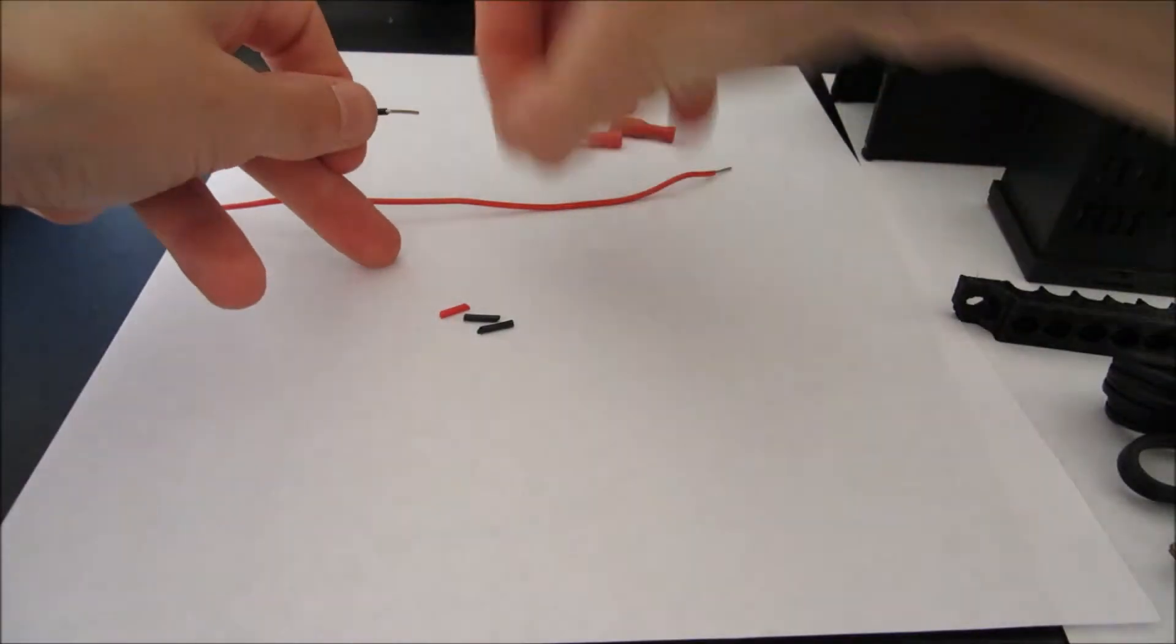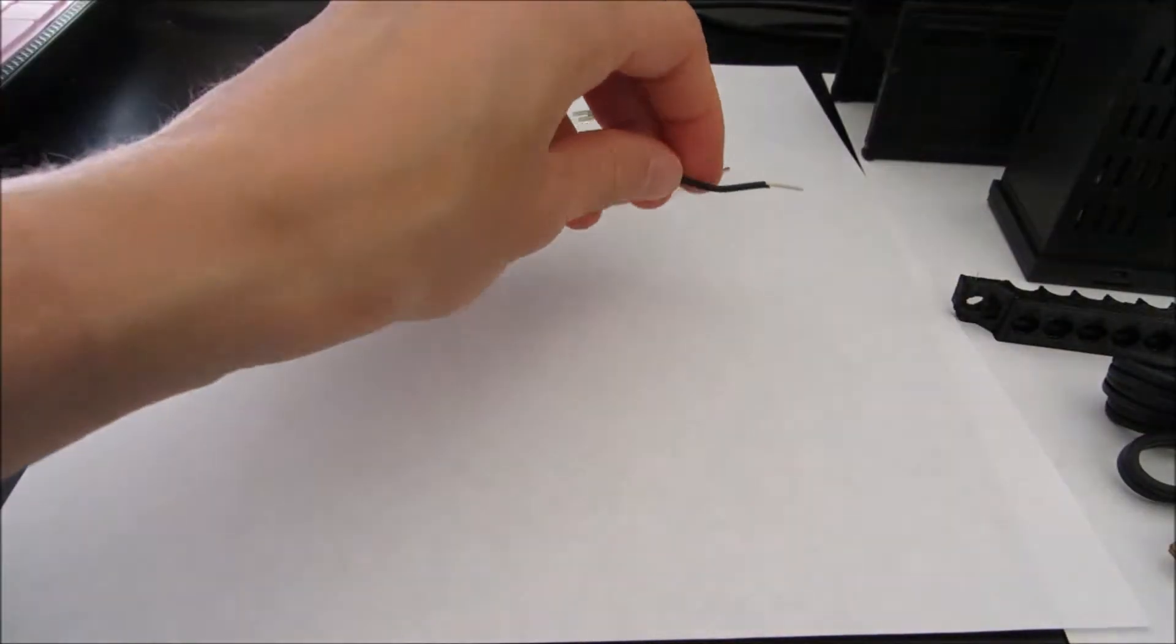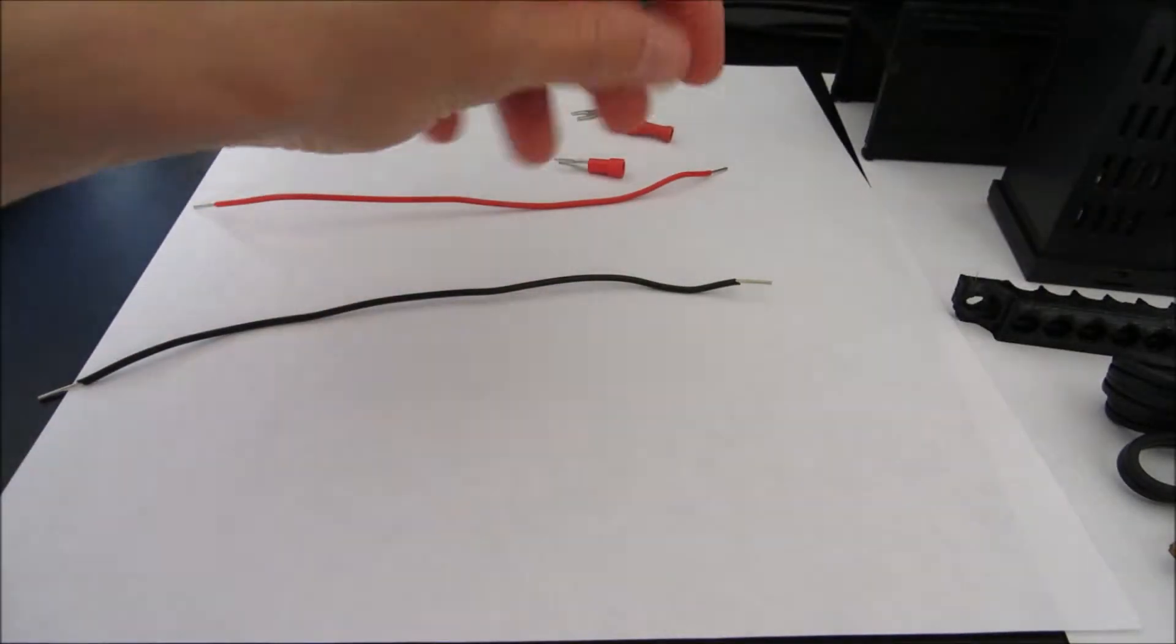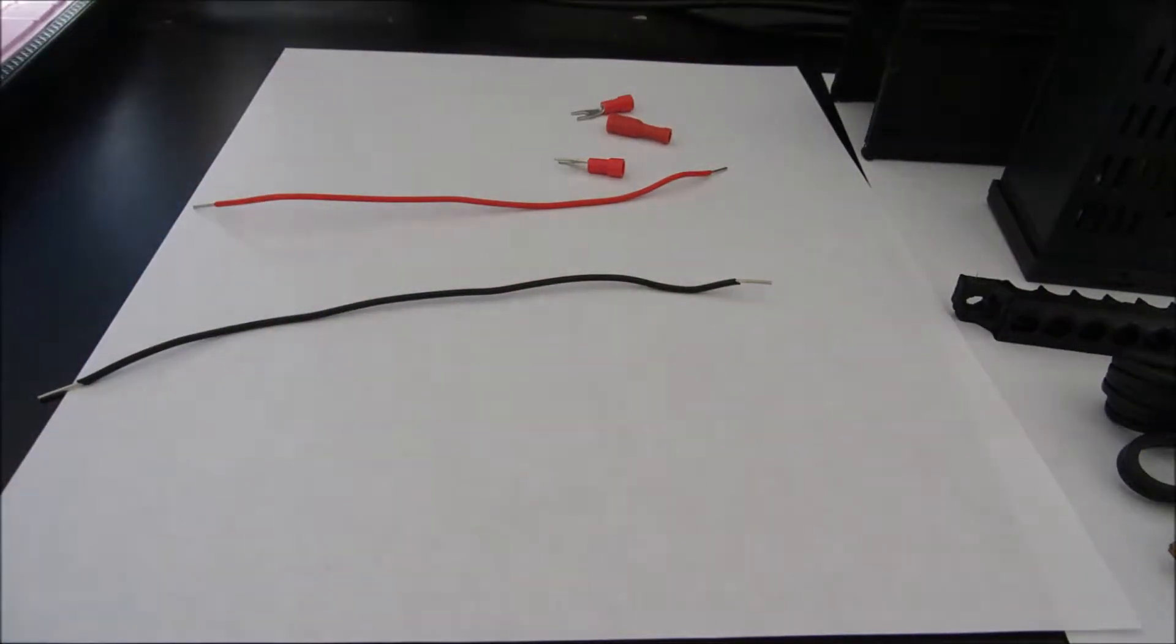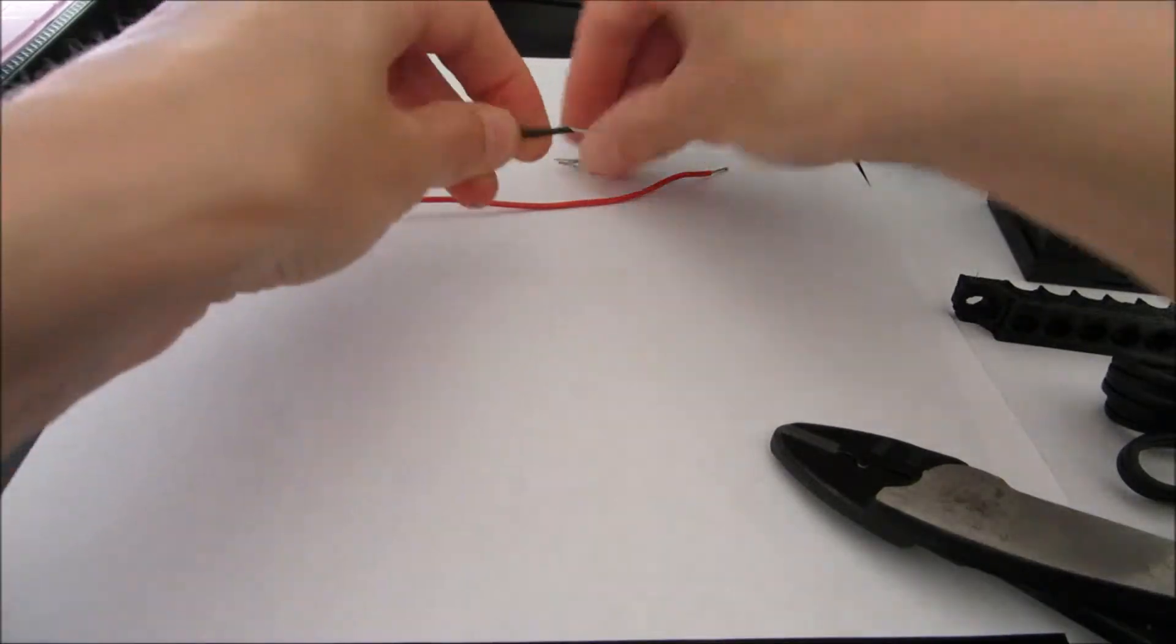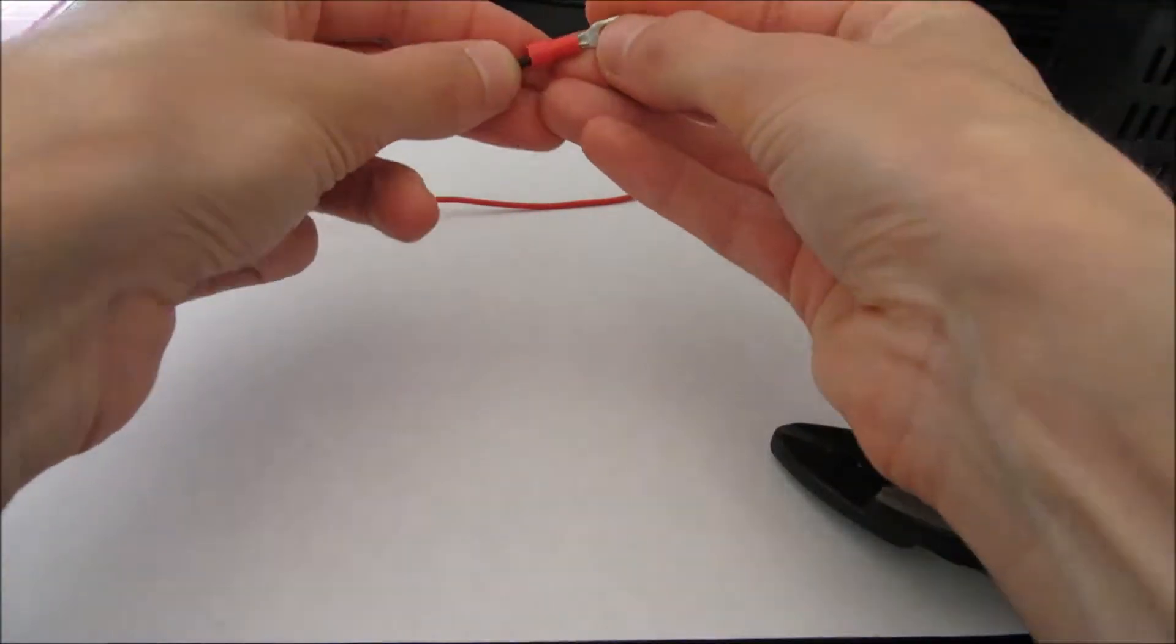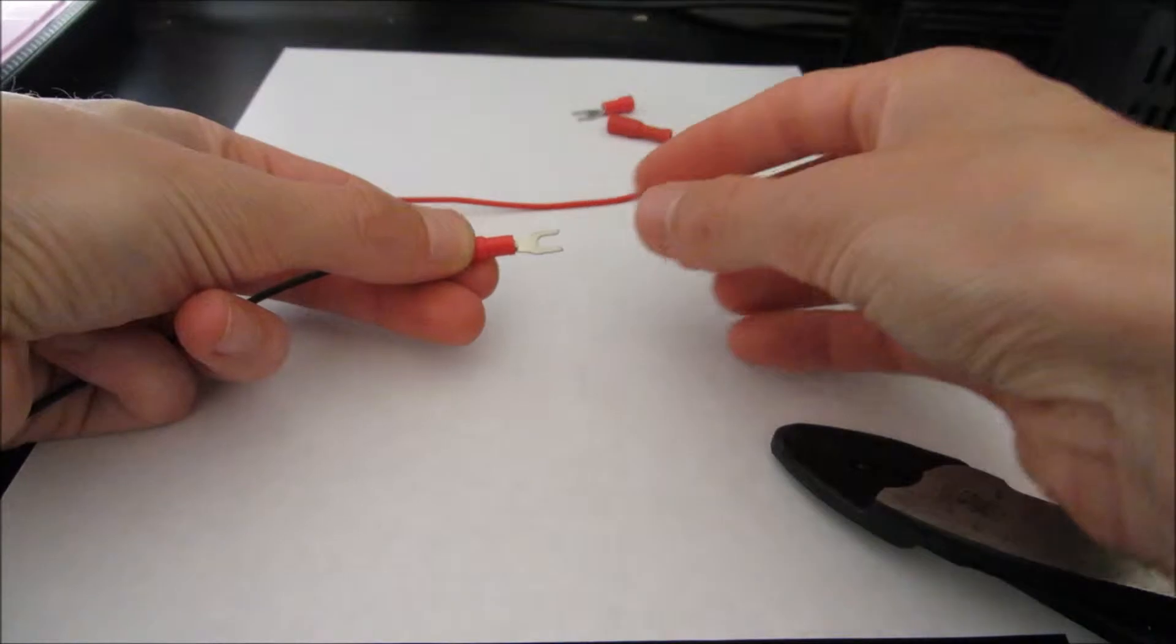Once we get that, we can take our trash and throw it to the side. And we will take our wire crimpers and we will put on to both, one end, one of the Y connectors.